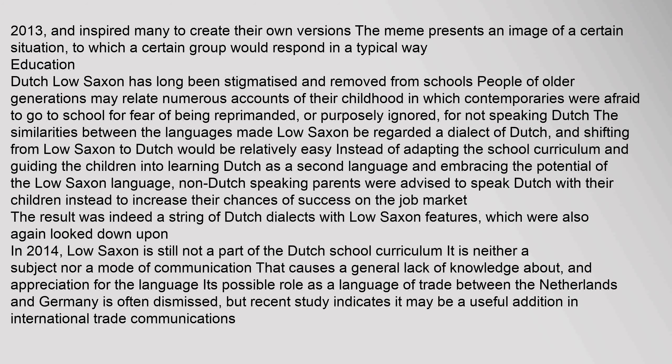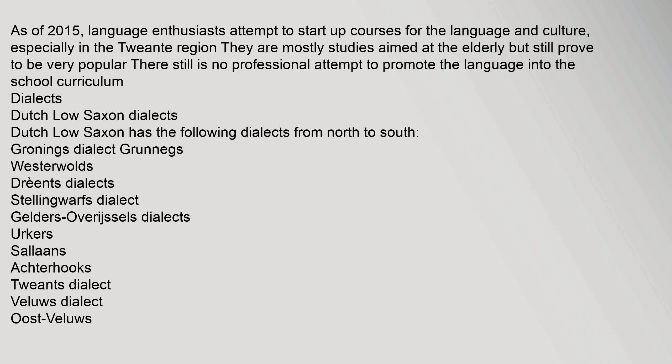As of 2014, Low Saxon is still not a part of the Dutch school curriculum — it is neither a subject nor a mode of communication — causing a general lack of knowledge about and appreciation for the language. Its possible role as a language of trade between the Netherlands and Germany is often dismissed, but recent study indicates it may be a useful addition in international trade communications. As of 2015, language enthusiasts attempt to start up courses for the language and culture, especially in the Twente region, mostly aimed at the elderly but proving to be very popular.